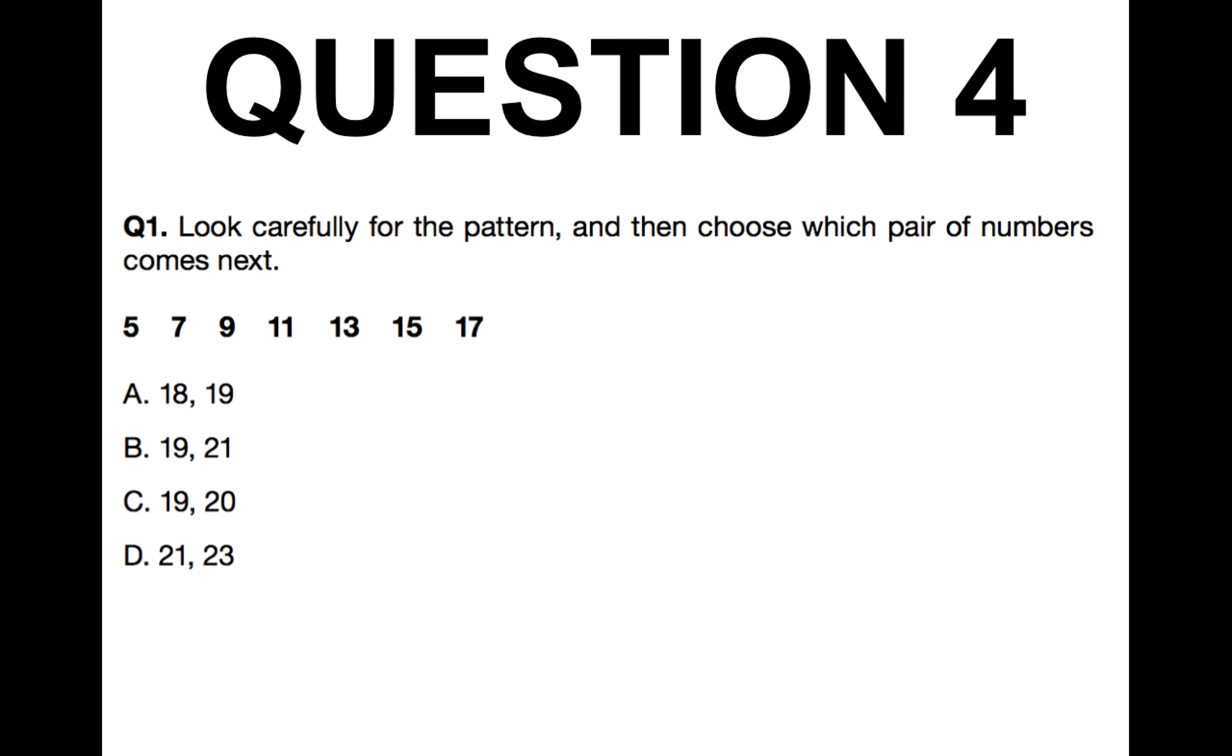So you're looking carefully for the pattern and then choose which pair of numbers come next. 5, 7, 9, 11, 13, 15 and 17. And the options are A 18 or 19, B 19 or 21, C 19 or 20 or D 21 and 23. Okay next question.